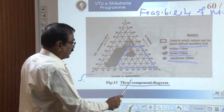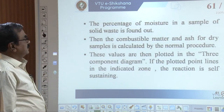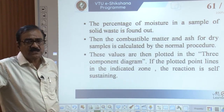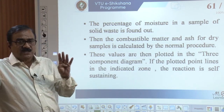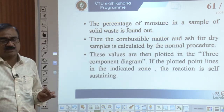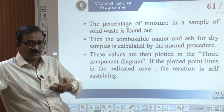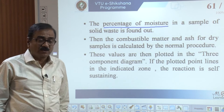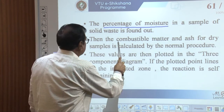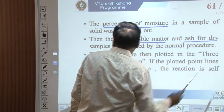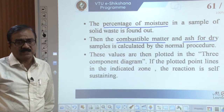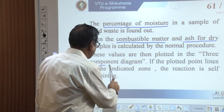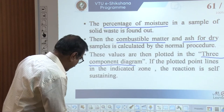This is the three-component diagram. The percentage of moisture in a sample of solid waste is found through analysis of physical, chemical, and biological properties. With that procedure, find out the percentage of moisture in the sample to be subjected to the incineration process. Then determine combustible matter and ash for dry samples. These values are then plotted in the three-component diagram.